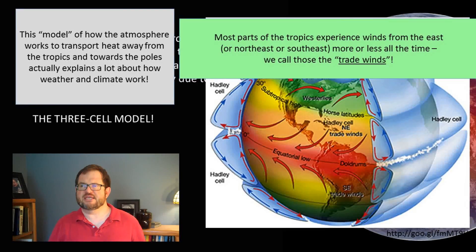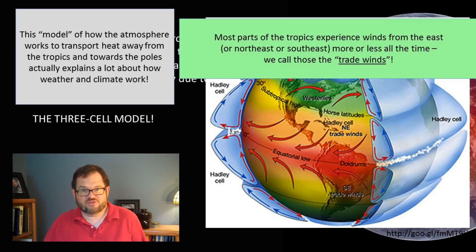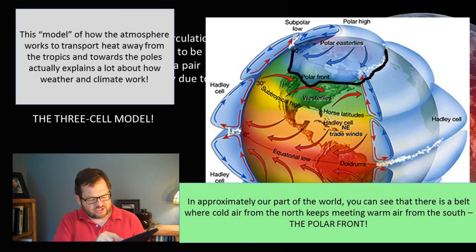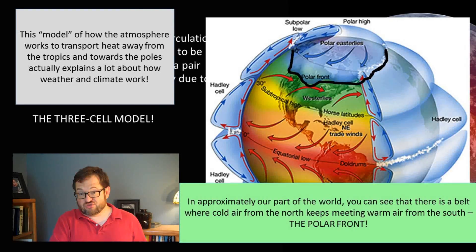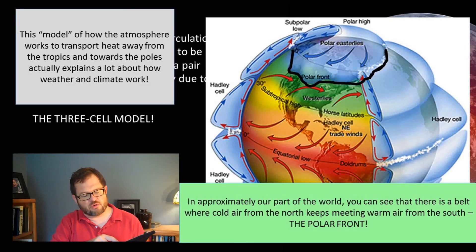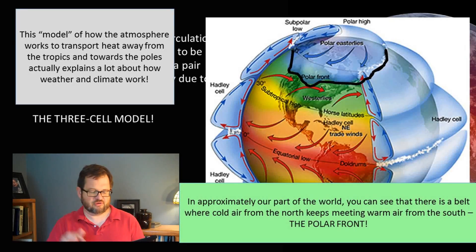Some years ago I spent time in Senegal in West Africa. I knew intellectually that the trade winds were persistent, but I had never seen anything like it — the winds just blew from the northeast every day, day and night, without change. On the globe I highlighted a feature called the polar front — roughly where warm air from the south meets cold air from the north. That meeting of warm and cold air pretty much happens in our part of the world in the Midwest, which is why we see a lot of passages of cold fronts, warm fronts, and stationary fronts.